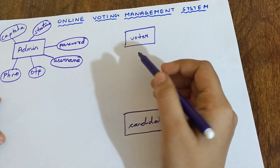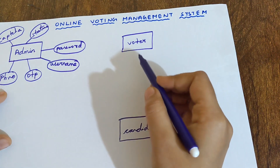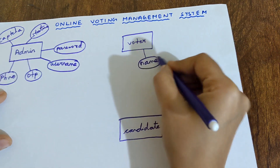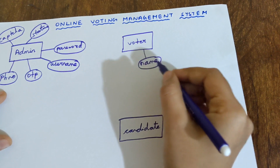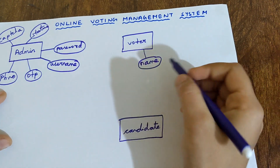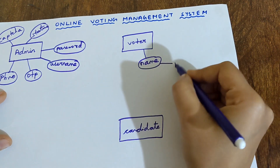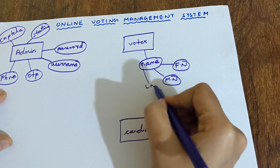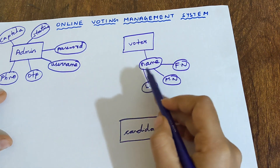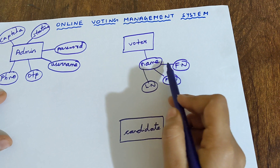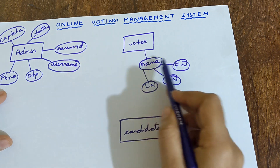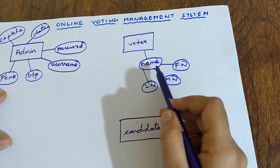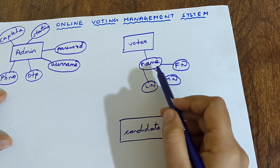Next, let us look into the attributes of the entity Voter. Voter will have a name — Voters are common people who are going to vote for the candidate. The name is further divided as first name, middle name, and last name. Since you are able to divide this attribute further, this name attribute is known as a composite attribute.